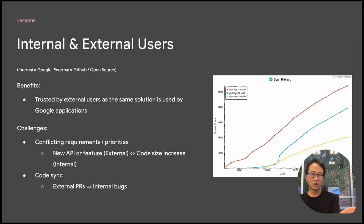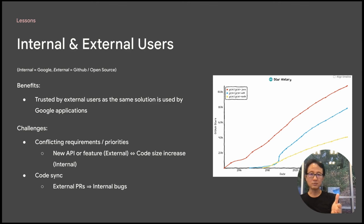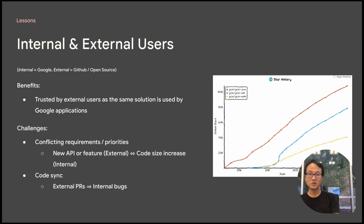Looking at the overall gRPC web adoption signals — we don't have many signals to actually measure adoption, so we use GitHub stars as one easy metric. The red one is Java, the blue one is for web, and the yellow one is for Node. Overall, the adoption of gRPC web has been pretty steady and keeps growing. However, this approach does have its own challenges. Specifically, we have to make trade-offs between adding new features and exposing new APIs versus code size increases. For internal Google applications like Chat, Gmail, or Search, code size is very important — usually the most critical performance metric. External developers have a wider spectrum of priorities and may not care about code size as much.